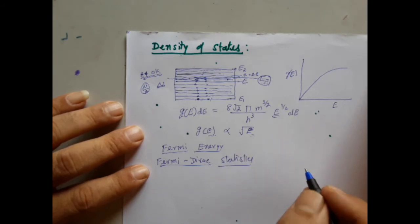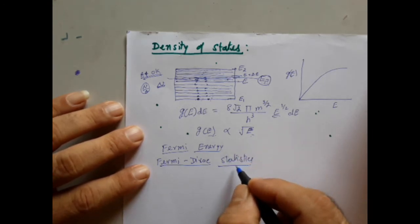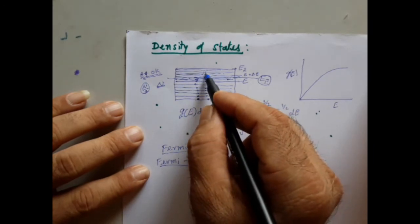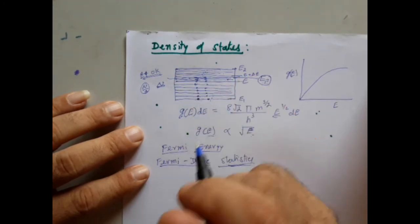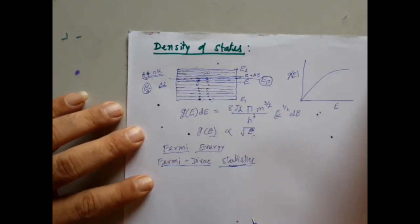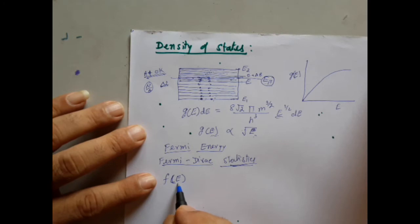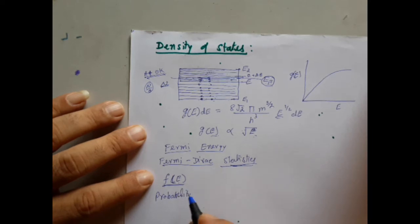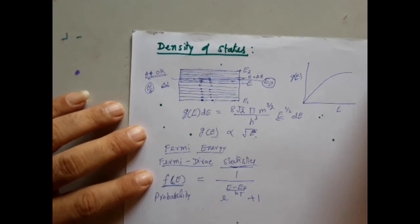Fermi-Dirac statistics states that under thermal equilibrium, free electrons acquire energy according to this statistical rule: no more than two electrons can occupy any energy level. As temperature increases, electrons occupy higher energy levels. This distribution is captured through a factor called the Fermi factor, represented as F(E), which is the probability of finding electrons at various energy levels. This probability is given by F(E) = 1 / (e^((E - EF)/kT) + 1).